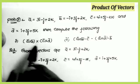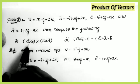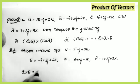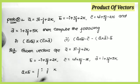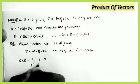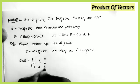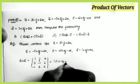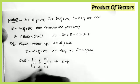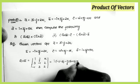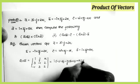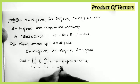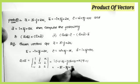The first question is (a×b)×(c×d). First finding a×b: setting up i, j, k with a = (3, −1, 2) and b = (−1, 3, 2). i(−2 − 6) = −8; −j(6 − (−2)) = −8; k(9 − 1) = 8. Therefore a×b = −8i − 8j + 8k.